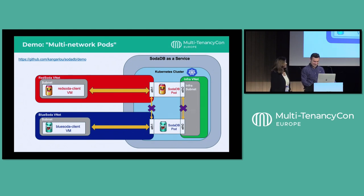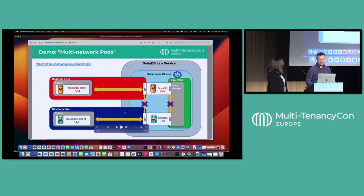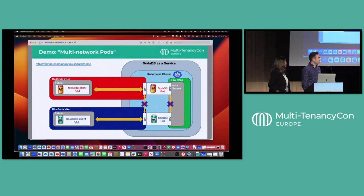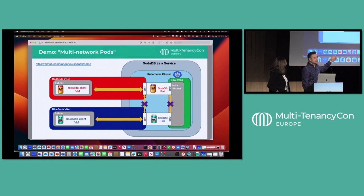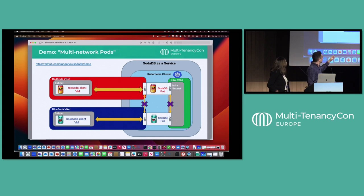Next, let's show you everything we talked about is real. In the setup, we have an Azure Kubernetes Service cluster running two instances of SodaDB application — one for the Red Soda company and one for the Blue Soda company. These pods both have two IP addresses. The eth0 NIC gets its IP address from the VNet and subnet associated with the AKS cluster, and the eth1 interfaces get their IP addresses from the customer's VNet and subnets. We're going to show that VMs on the customer side can only access the pod provisioned for that customer and nothing else.